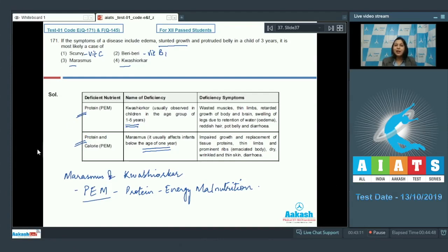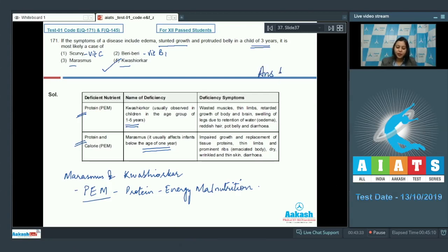Here in the question the child belongs to the age group of three years and overall has stunted growth and protruded belly, which indicates deficiency of protein but not overall energy. Therefore the answer is option number 4, that is kwashiorkor.